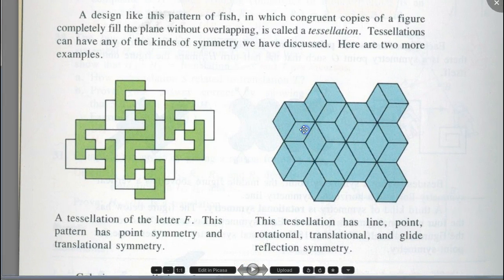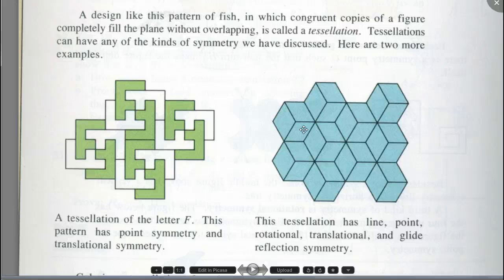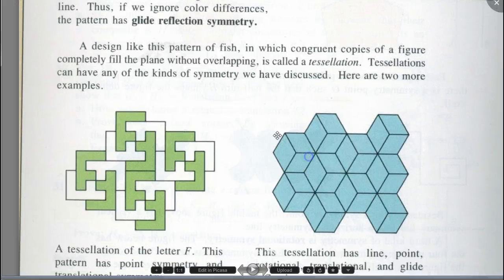A design like this pattern of fish, in which congruent copies of a figure completely fill the plane without overlapping, is called a tessellation. Tessellations can have any of the kinds of symmetry we have discussed. These are called tessellations — you see how congruent copies of the figure completely fill the plane without overlap.